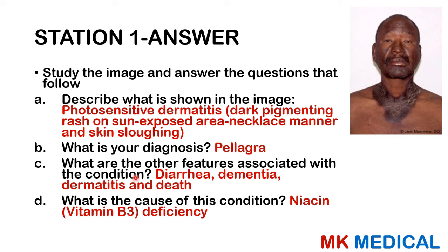Pellagra is the result of a deficiency in niacin, which is vitamin B3. Here's an alternate image affecting the feet — you can see this darkish pigmentation, sloughing off of the skin, and it looks like this person is very ashy. Keep in mind that this is pellagra.